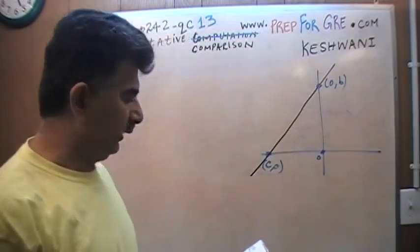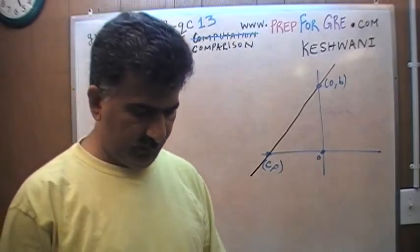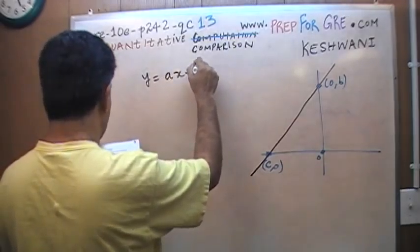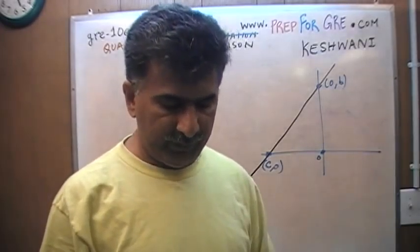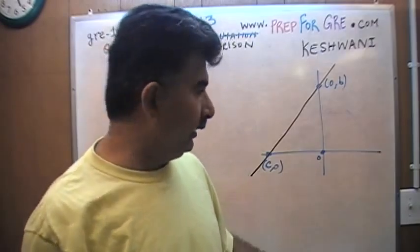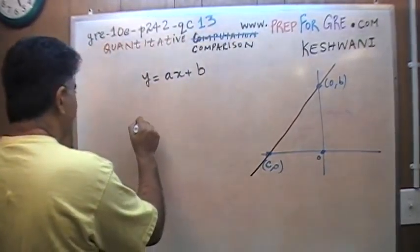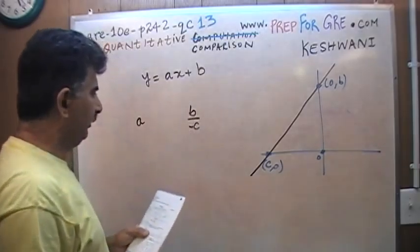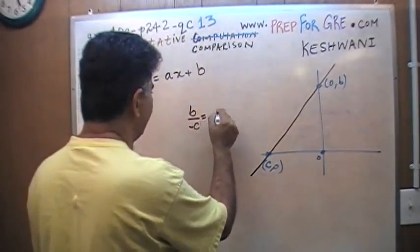Again, the motto is very simple. Whenever we get a chance for the dramatics, why not make full use of it? So I changed the color. There we go. And we are told that the equation of the line is Y equal to X plus B. The line Y equal to X plus B is graphed on the rectangular coordinate axis, as you see here.